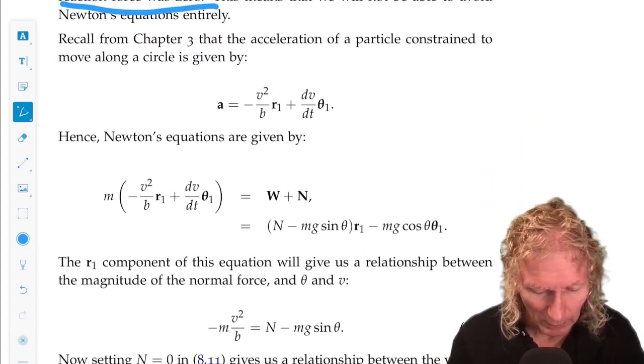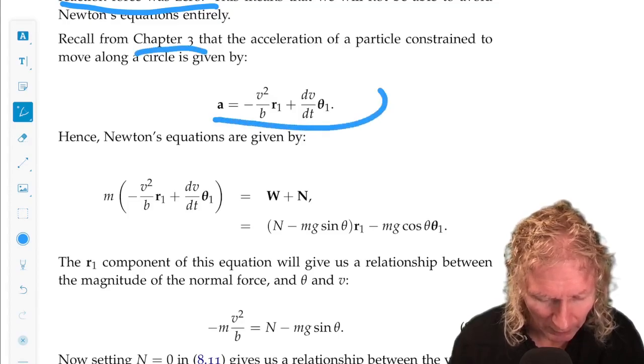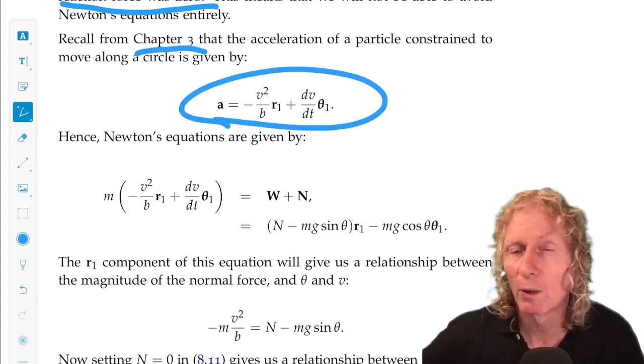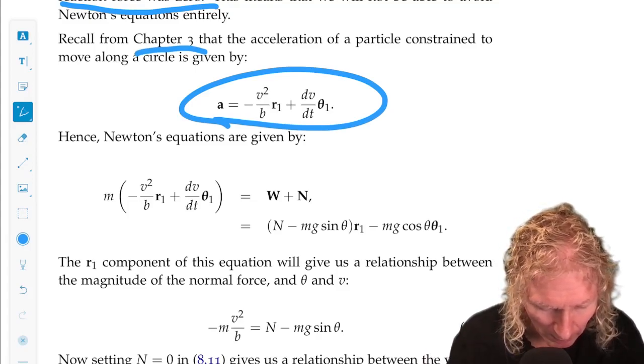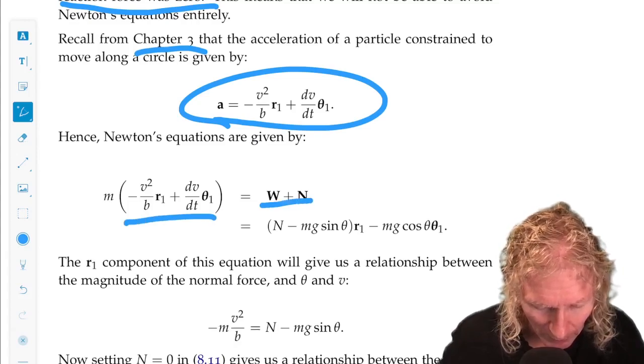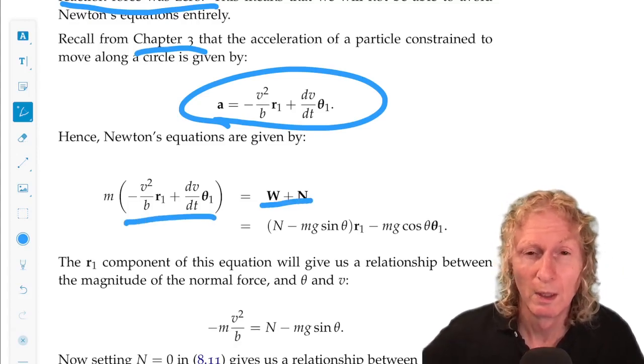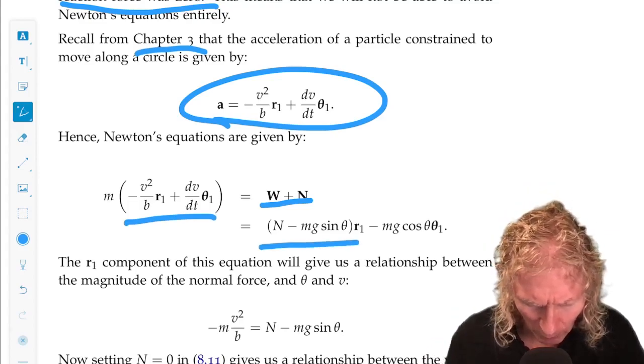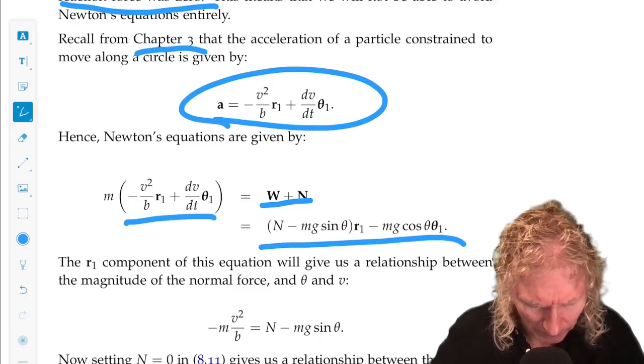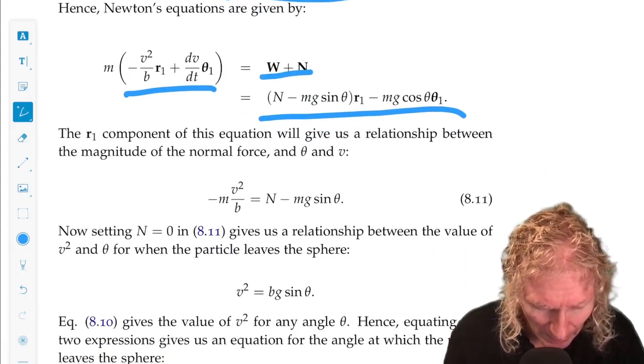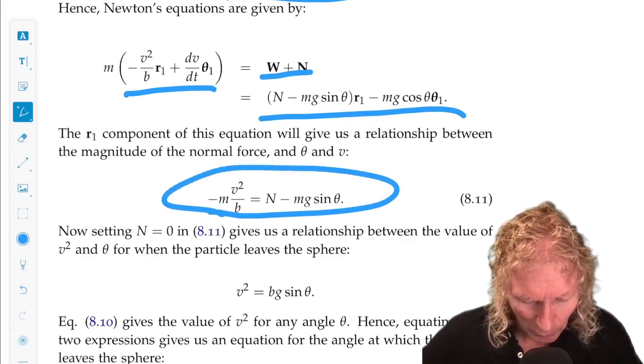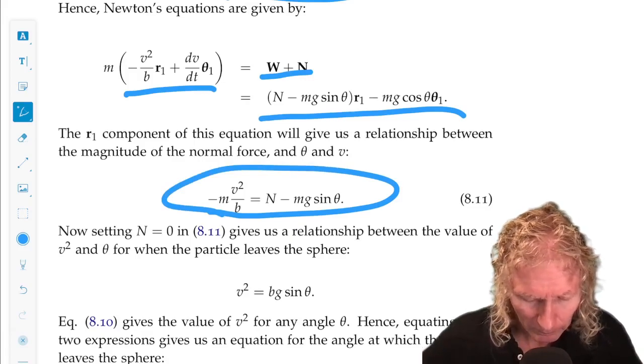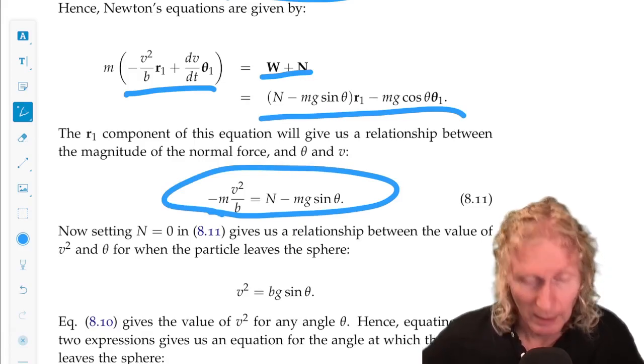Remember earlier on also that the expression for acceleration in the r1 theta 1 coordinates has this form. So, m times acceleration is the sum of the forces acting on the particle, the gravitational force, w, and the normal force. We've already worked out what these are previously. And the r1 component, you easily see you get an expression for n in terms of theta and v squared.